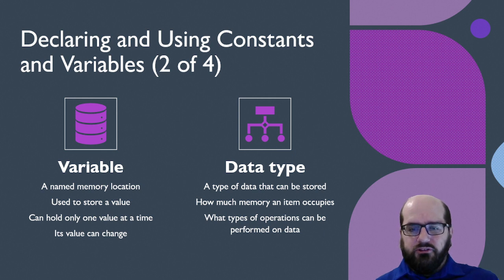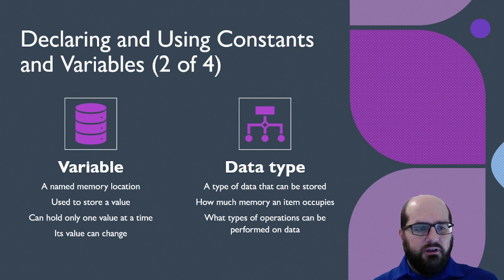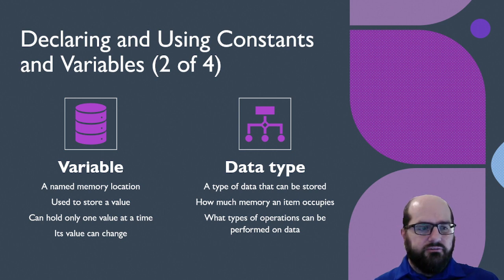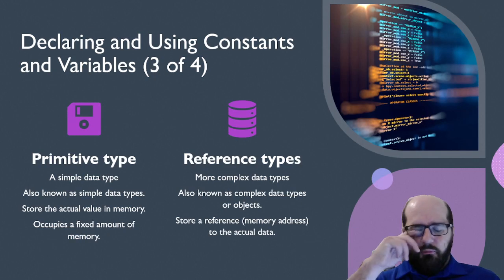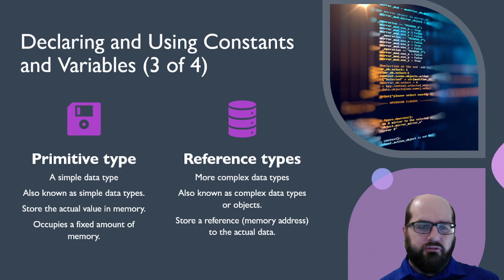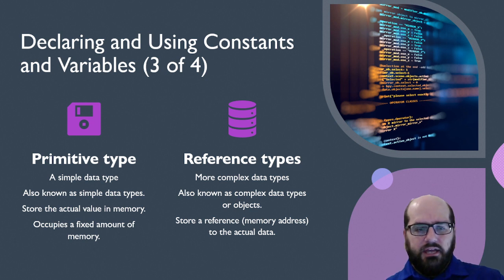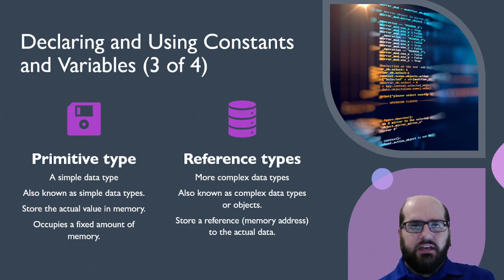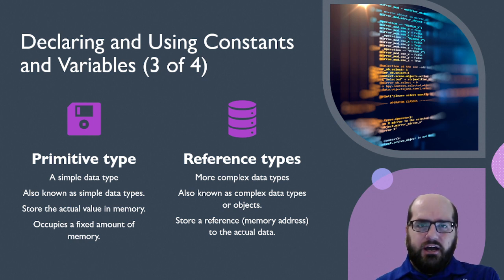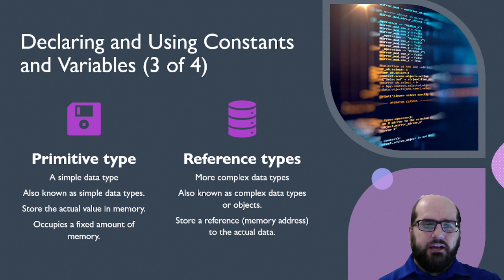Data types describe how much memory an item occupies and what type of operations we can do. An integer or a Boolean, for example, doesn't have the same operations that a class would have. A primitive type is a simple data type. It stores the actual value in memory. So if I say 'int a equals 5', it's storing the actual 5, and it occupies a fixed amount of memory that's defined by the data type.